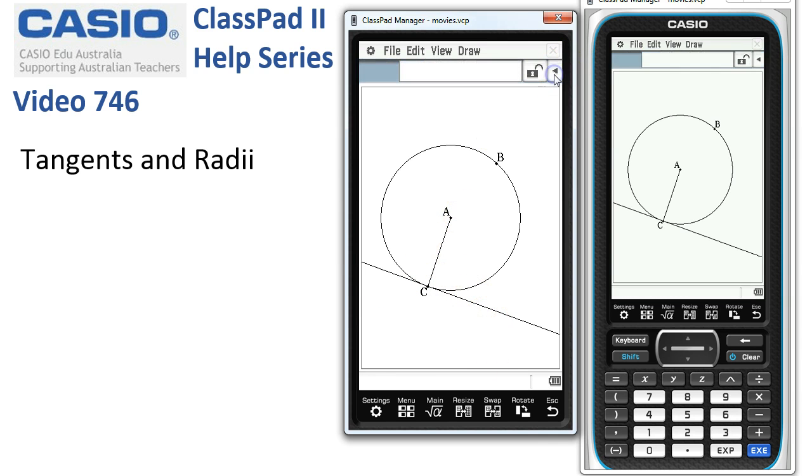Right, off to the measurement toolbar. Let's measure how large is the angle between the tangent and the radius, and it's saying 90. If we tap onto this icon, it takes a copy of the angle out onto our work surface.